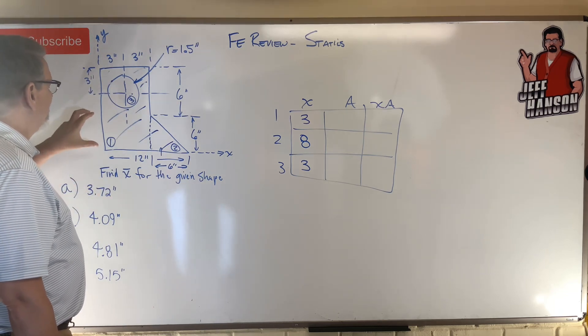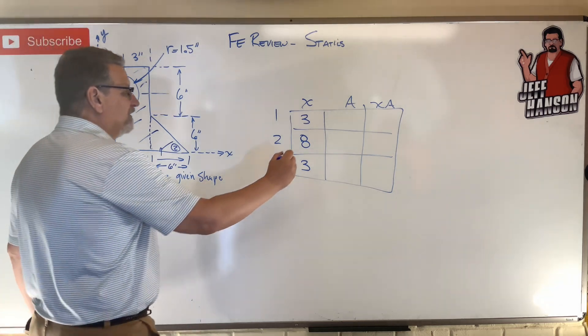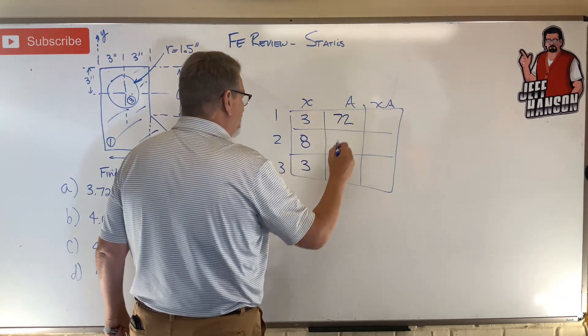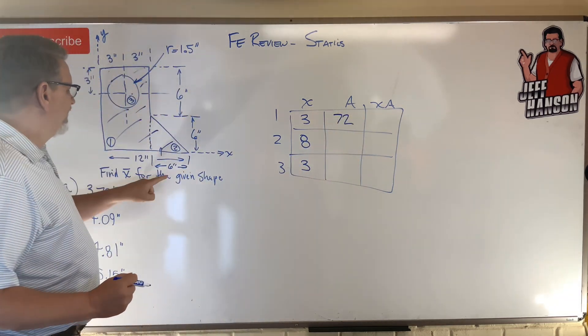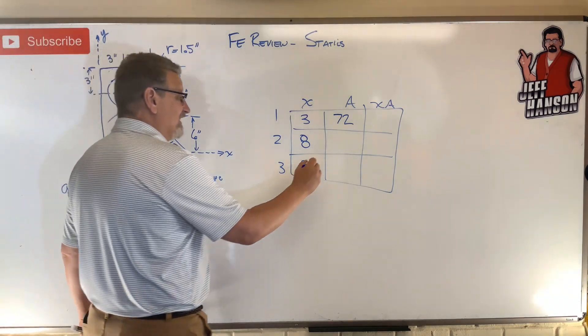All right, now let's talk about areas. This guy here is, let's see, six by 12, that's 72. The triangle here is six times six, 36, divided by two, that's 18.